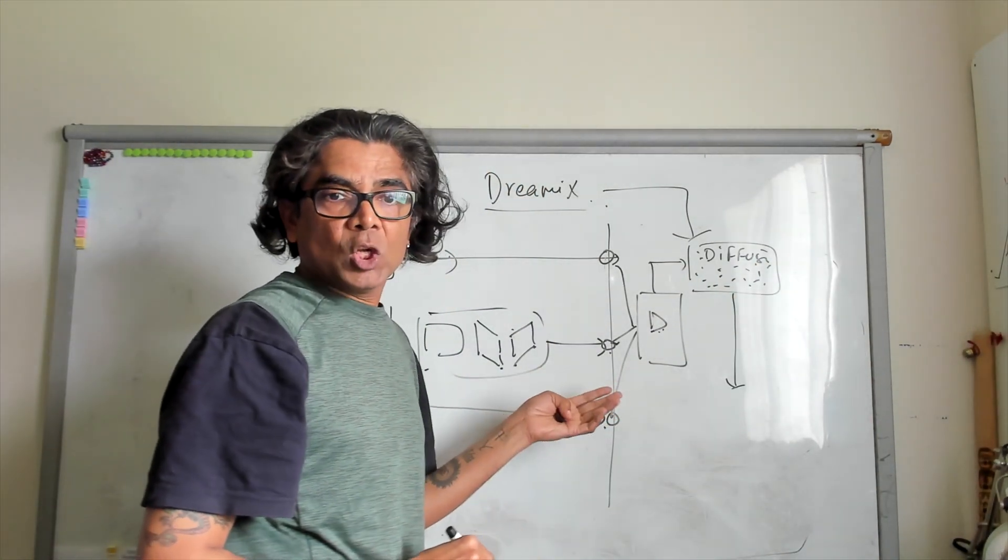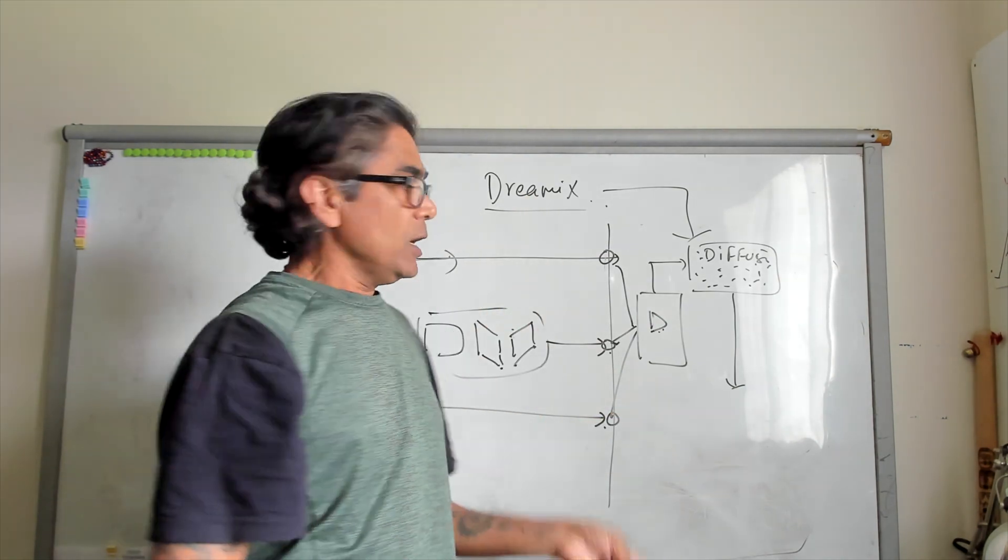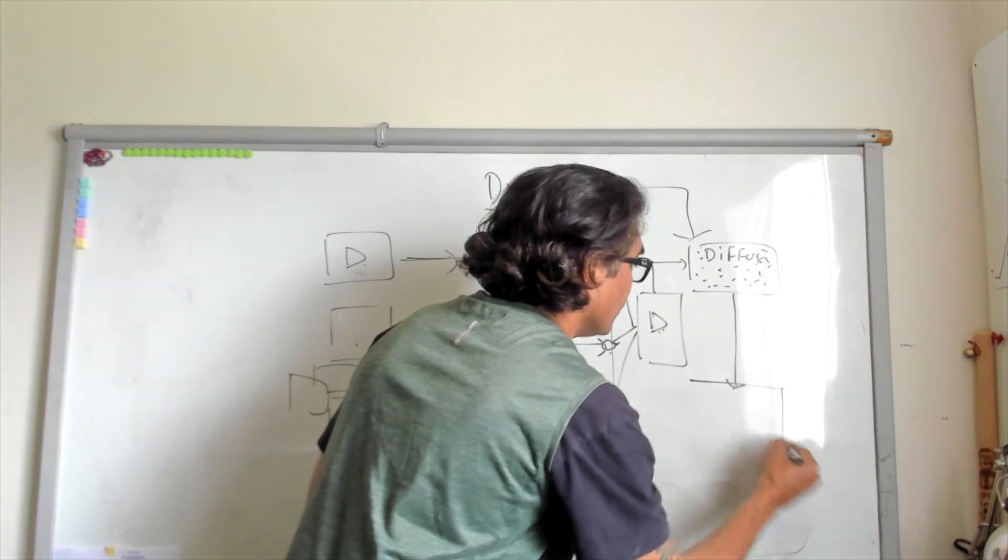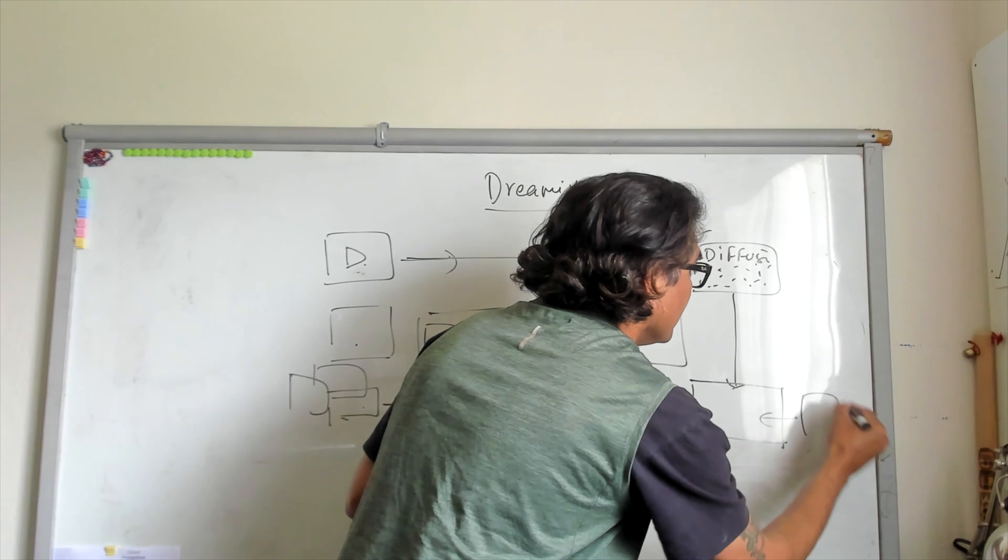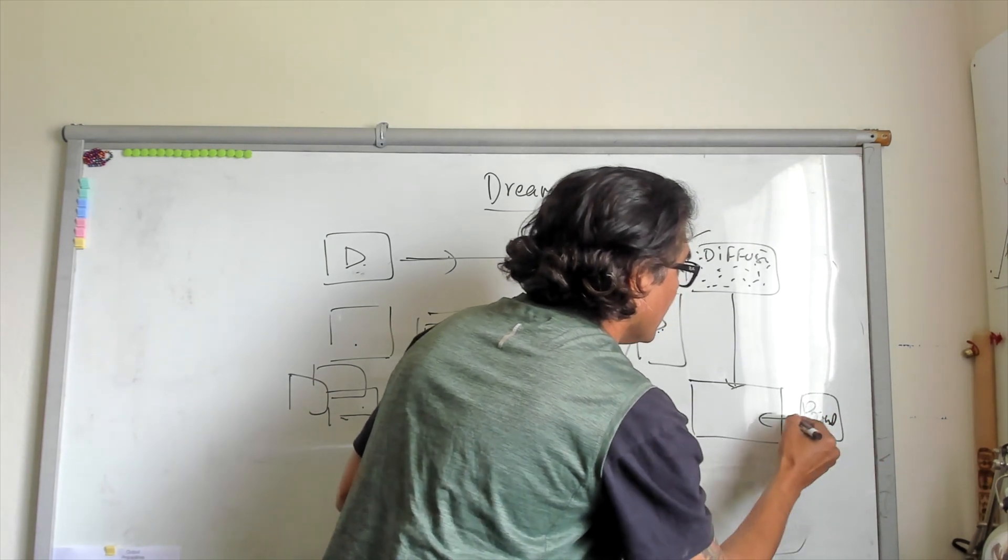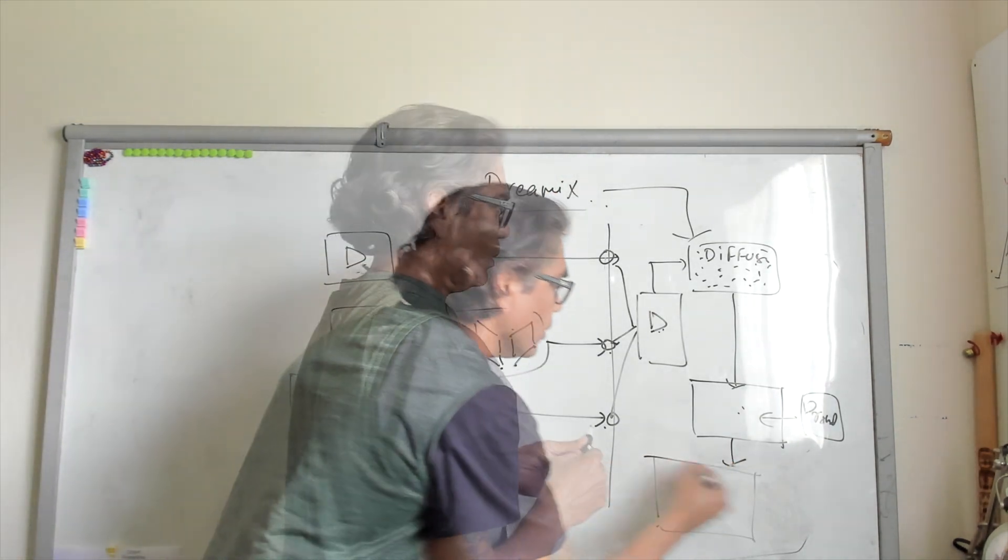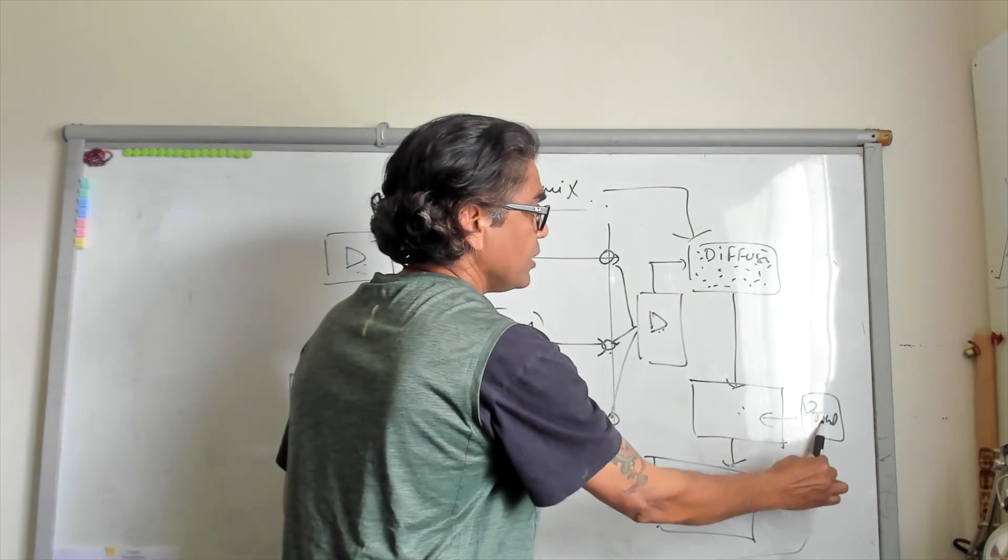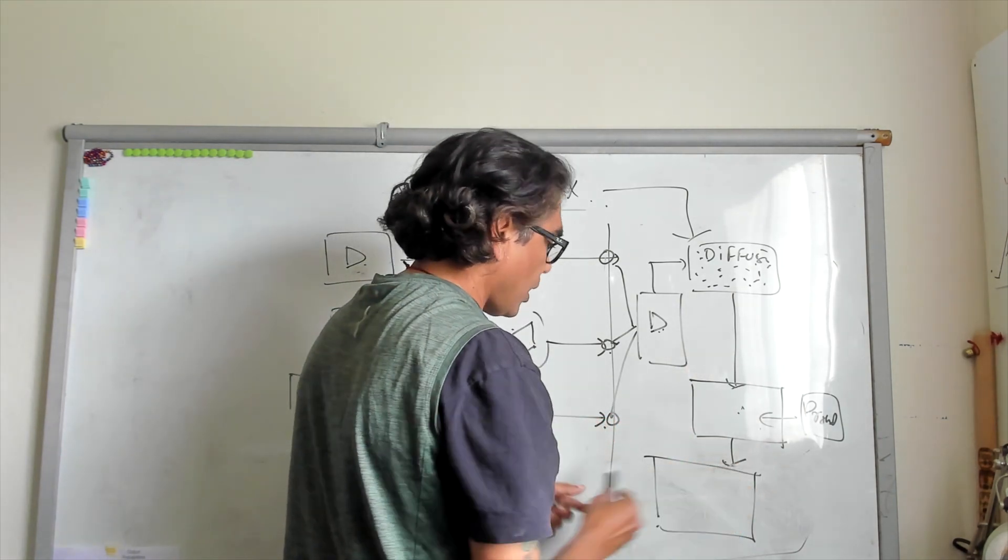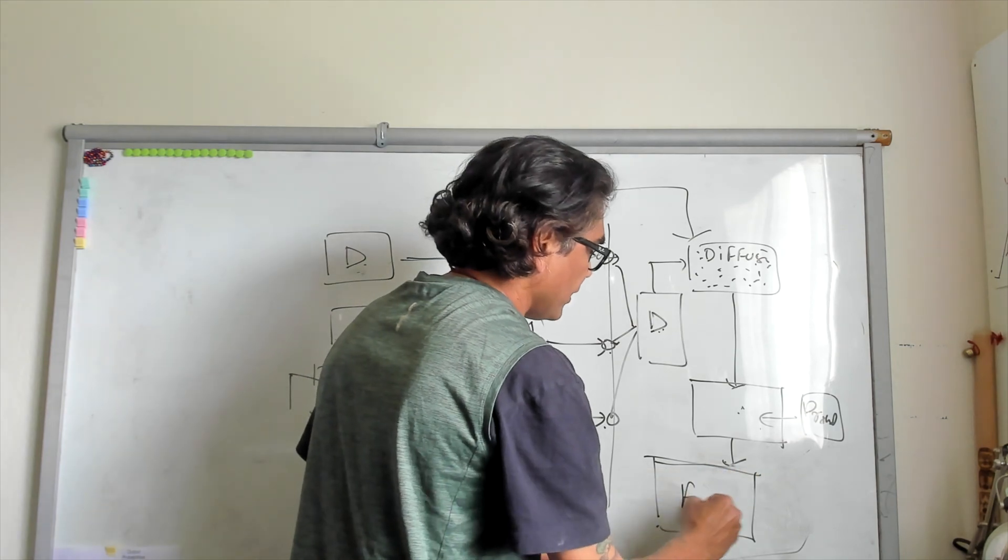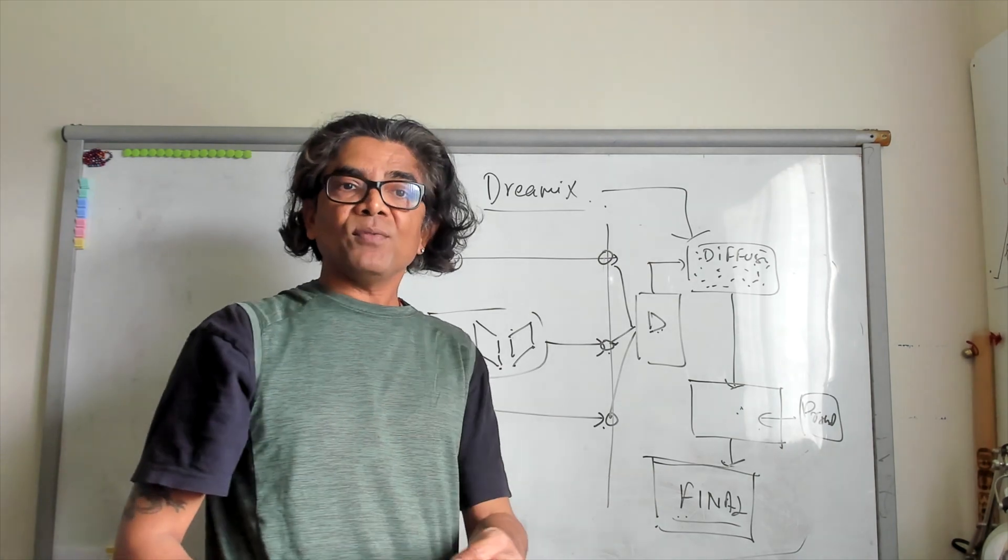The next step is to apply the Dreamix video processing engine. Once we apply the Dreamix video processing engine plus there could be the prompt, and here will be your prompt. Now combining both of them, you are going to get your final video. By adding the prompt and the Dreamix diffusion video process, you get your final video as the result which you have seen in the previous examples.